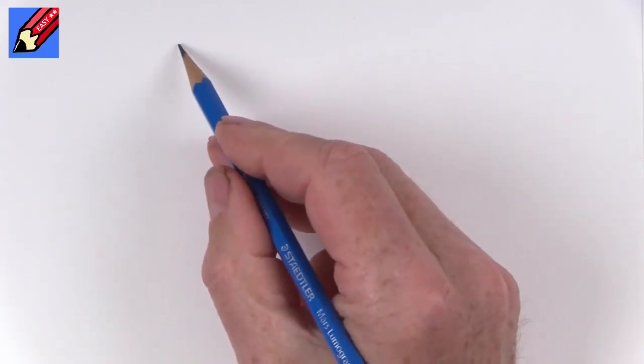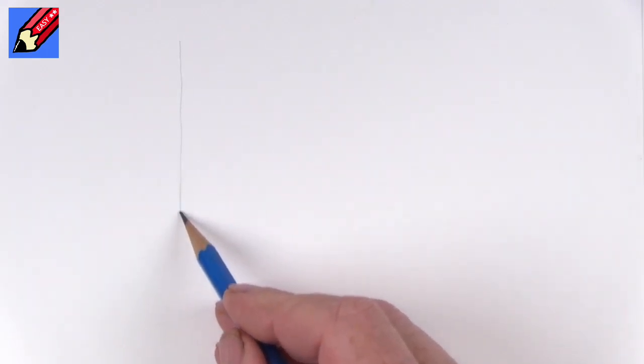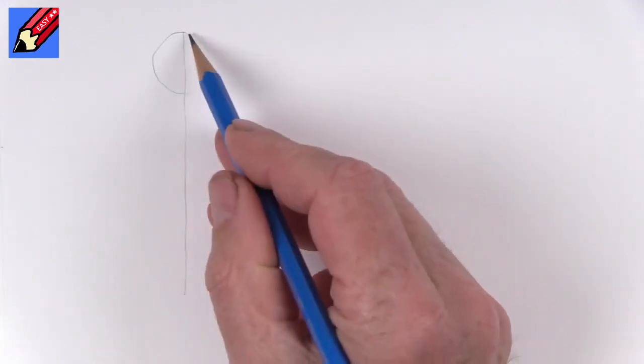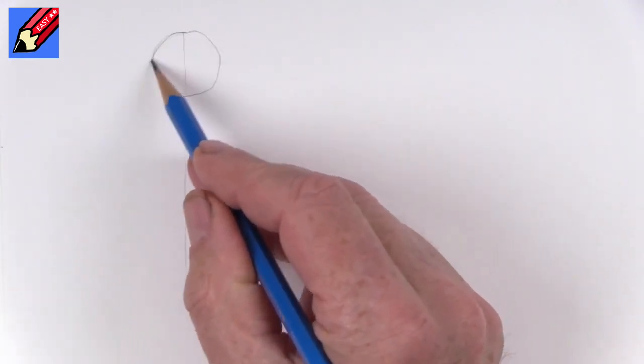Start by drawing a line over on this side, a vertical line. And then you're going to want to have a circle like that, which is kind of the plan for the head.